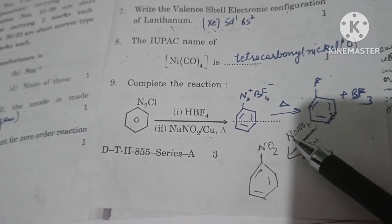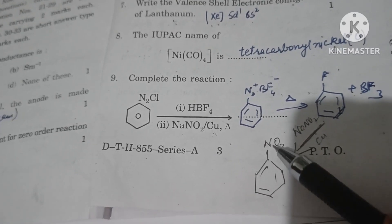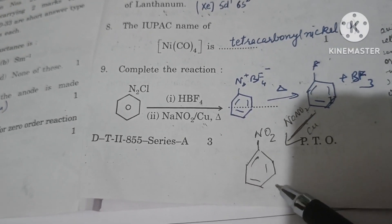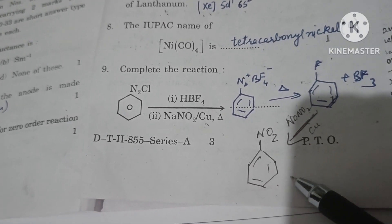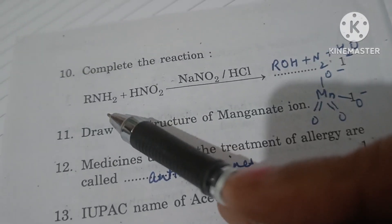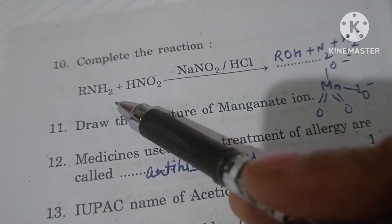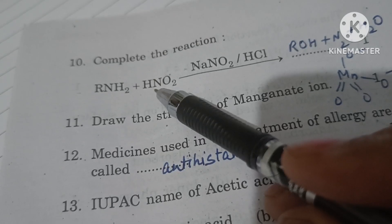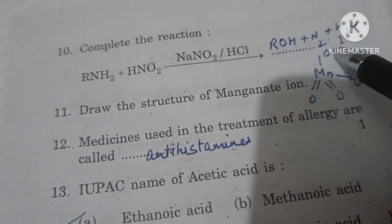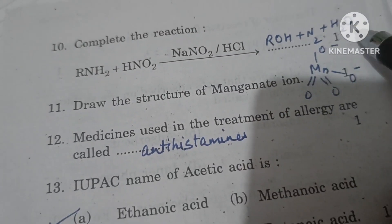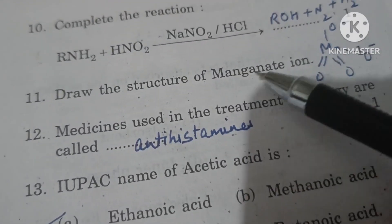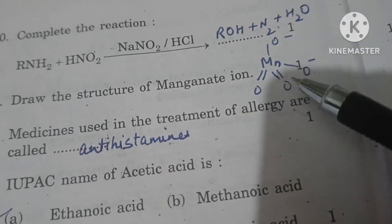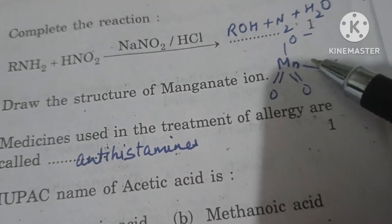In the second step, fluorobenzene is reacted with NaNO₂ in the presence of copper to form nitrobenzene. Primary amine plus nitrous acid will form primary alcohol plus nitrogen plus water.